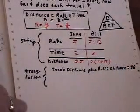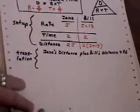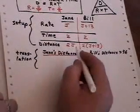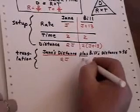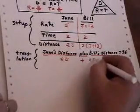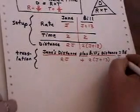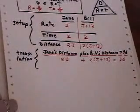So the third row can always be filled in with one of these three formulas. Now, I try to translate the sentence. Jane's distance, which is translated as 2J, plus Bill's distance, which is translated as 2 times (J plus 13), is 36. So now I have my full translation.